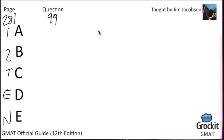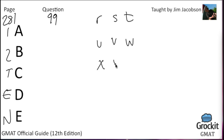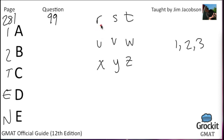Question 99: Each of the letters in the table above — R, S, T, U, V, W, X, Y, Z — represents one of the numbers 1, 2, or 3, and each number occurs exactly once in each row and exactly once in each column. What is the value of R? This is actually like a Sudoku puzzle — each number can appear only once in each row and column. We want to know the value of R.